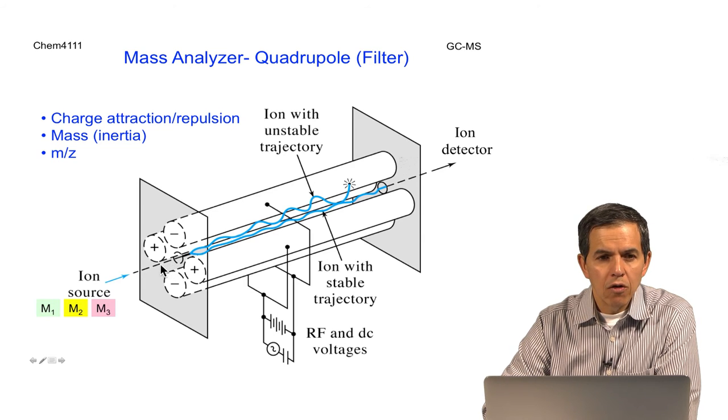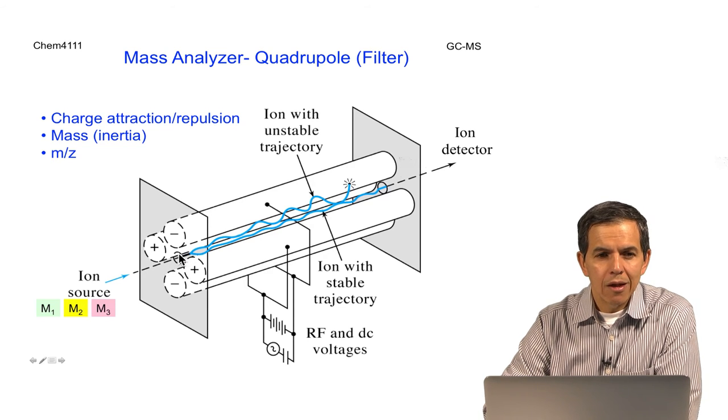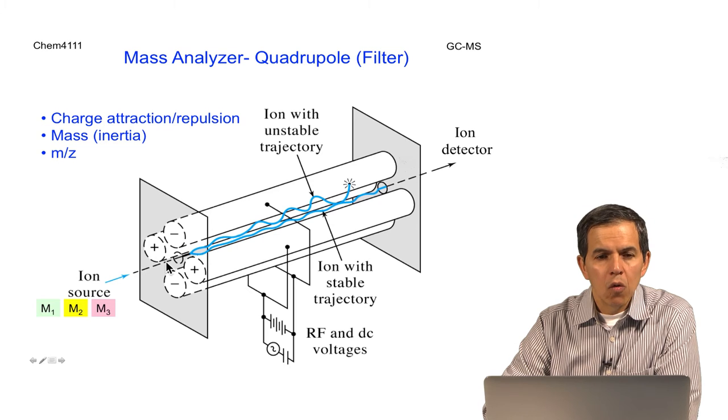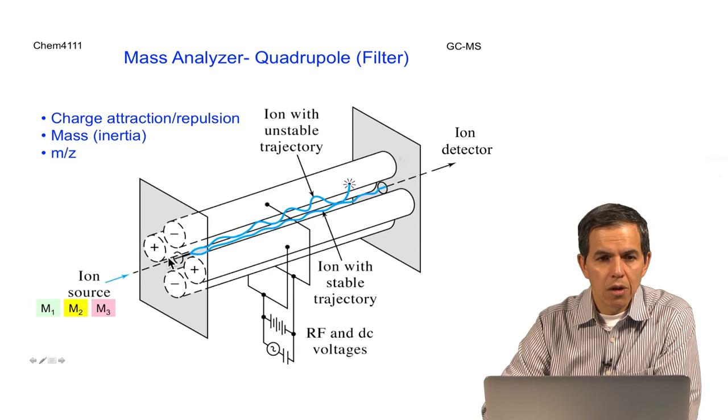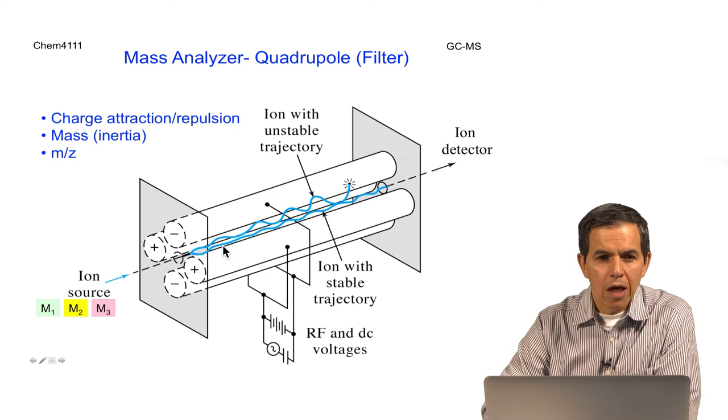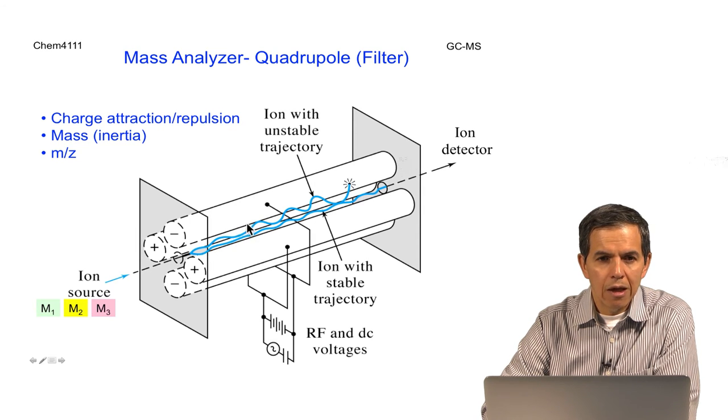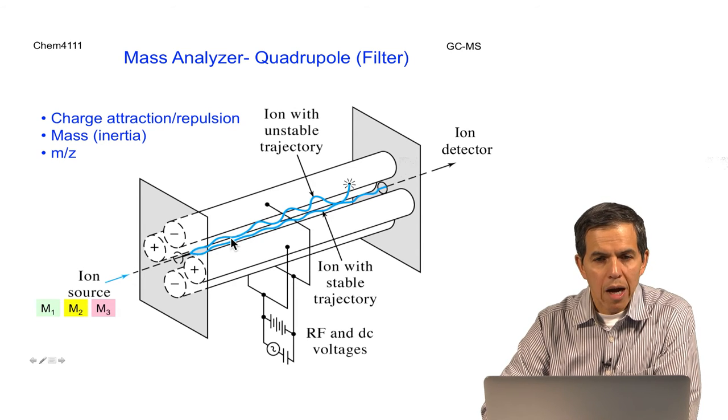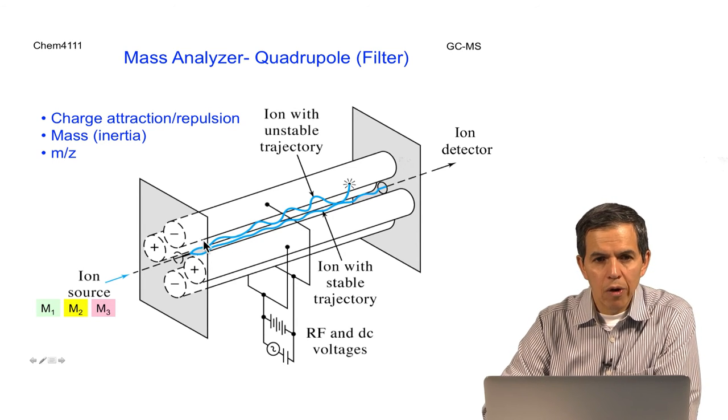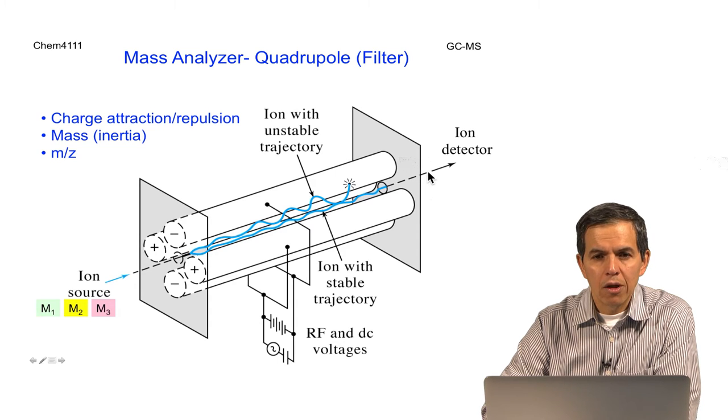When these ions travel through the poles, they will experience attraction and repulsion depending on the charge of the ion and the charge of the pole. Because the ions have mass, they will have inertia. Heavy ions will tend to move almost in a direct trajectory, while light ions will tend to move towards or repel from the poles faster. If they are attracted strongly, they will collide and get lost against the poles.